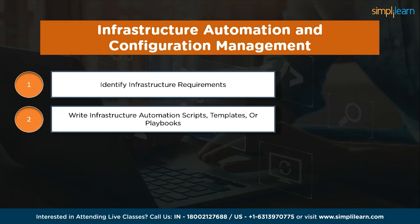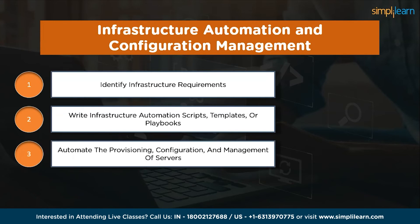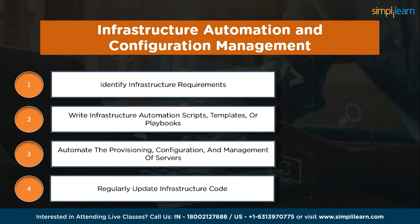DevOps engineers write infrastructure automation scripts and templates specifying how infrastructure should be provisioned, configured and managed. They leverage infrastructure as code (IaC) principles using tools like Ansible, Chef or Puppet to automate deployment and configuration of infrastructure components. They also use version control systems like Git to track changes, collaborate with team members and manage different versions of infrastructure code, making it easy to track and revert changes whenever necessary.